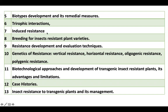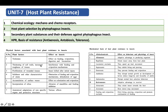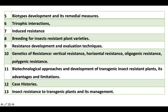The next topic is biotype. The examples given here you need to remember, as they are asked in interviews and as objective questions in NET, JRF, or SRF exams. Biotype is a new population capable of damaging and surviving on plants previously resistant to the population of the same species.